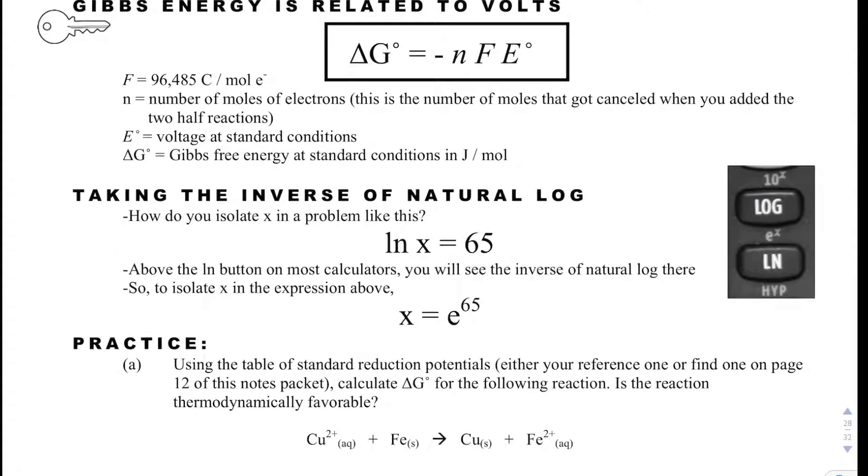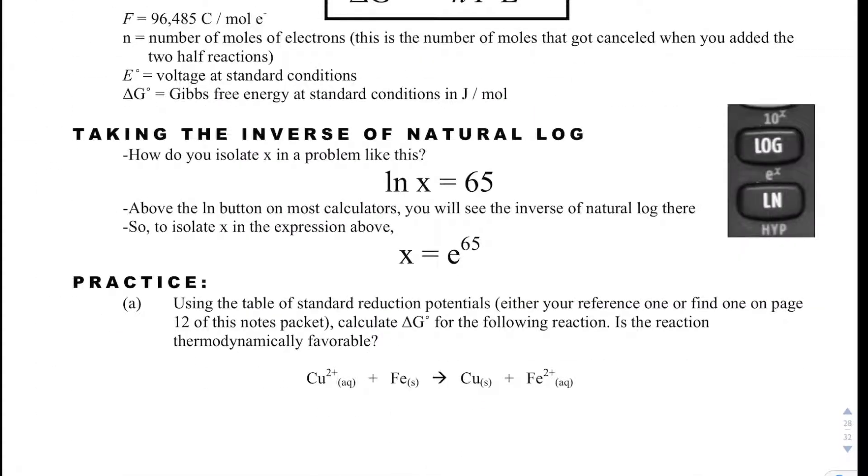Our other equation that we're going to use is how we solve for delta G when we're given voltage. So what you should be able to do if you're given natural log is you should be able to isolate a problem down to natural log of whatever variable equals that number. What you do is you take E, the inverse of natural log is actually E, to whatever number is on the other side, and that will isolate your variable. So let's see how this works.